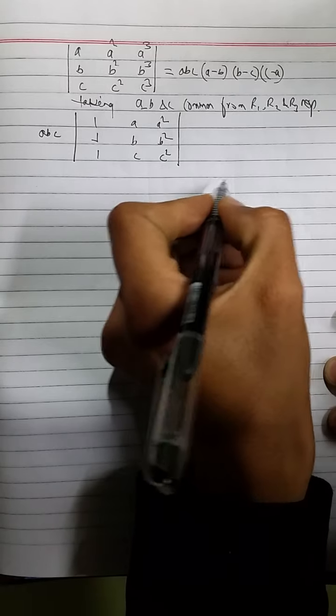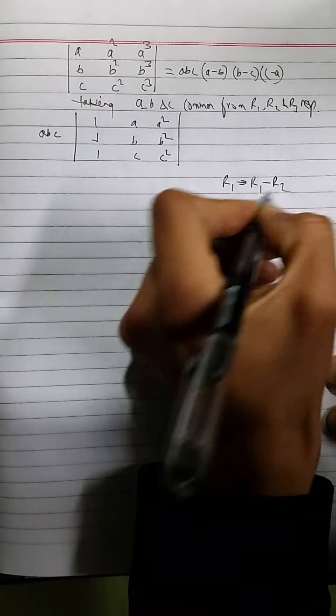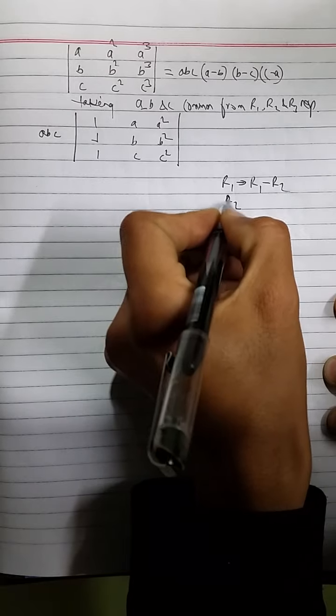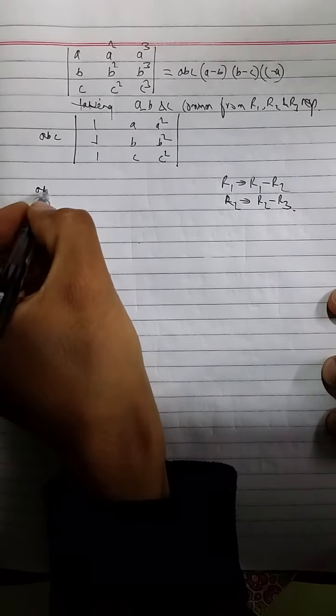Write down operation on the right side. Row 1 is operated as row 1 subtraction row 2. Similarly, row 2 operated as row 2 subtract row 3.